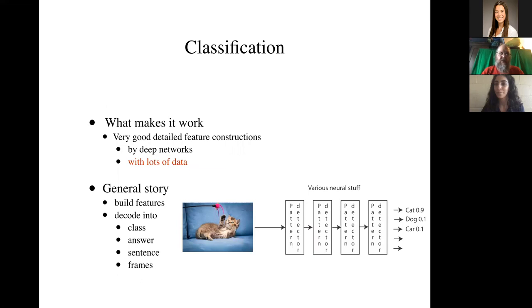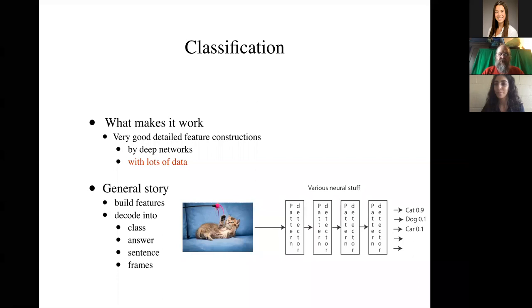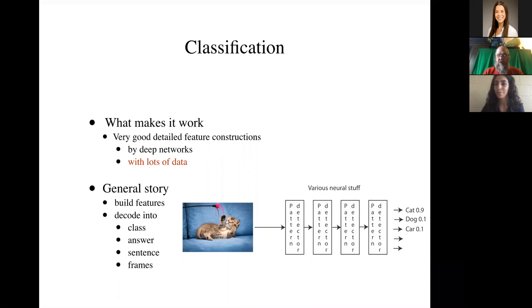And it boils down or doing so boils down to a relatively straightforward recipe. We need to ask what makes classification work. And the answer is very good, very detailed feature constructions by what are known as deep networks trained with a tremendous amount of data. And there is a completely general story here. You build features and then you decode those features into class or an answer to a question or a sentence or frames or all sorts of other things. So the cat picture goes into what I like to refer to as various neural stuff. And you want to think about that as a layer of pattern detectors, followed by another layer of pattern detectors that detects patterns of patterns, followed by another layer of pattern detectors that detects patterns of patterns of patterns. And that goes on for a bit. It might go on for hundreds or even thousands of layers. And then outcome scores for different categories.